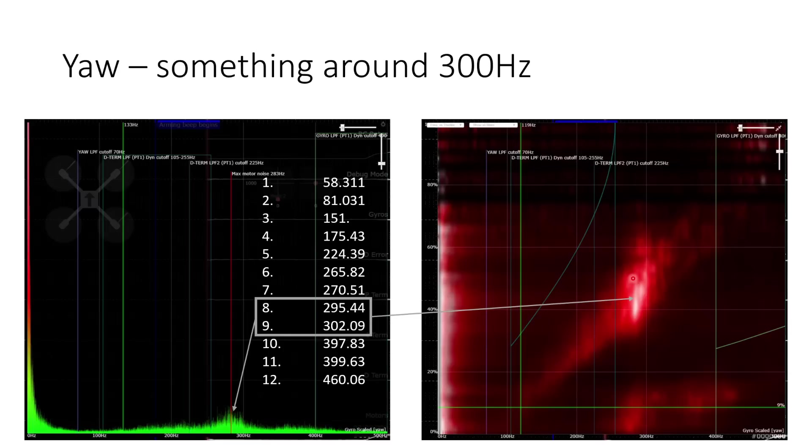Whenever you have a vertical band like this it's always going to tell you that there's a potential for a frame resonance there because it's saying that the vibration is staying at the same frequency even while the motor speed is changing. So that means it's unlikely to be just due to the motor noise, there's something inherent there at that frequency that's being excited and it's being excited even at different motor speeds.